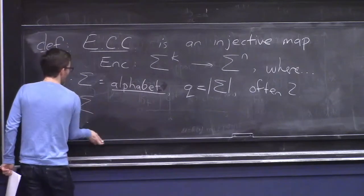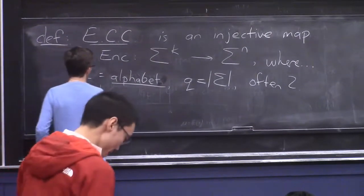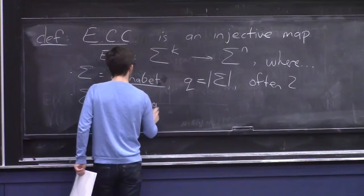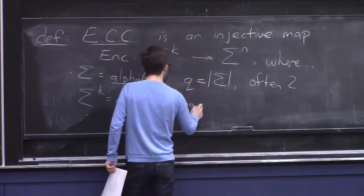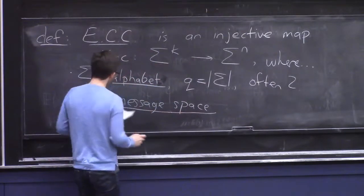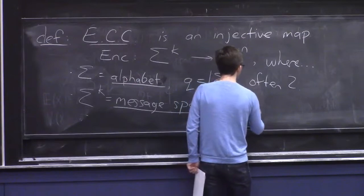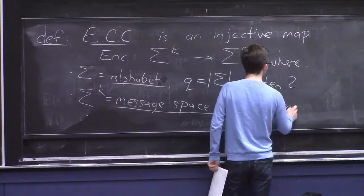The set of all possible things you might send, Sigma to the K, is called the message space. And this parameter K is called the message length, or sometimes called the dimension, for reasons we'll see soon.